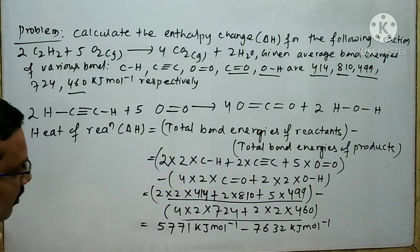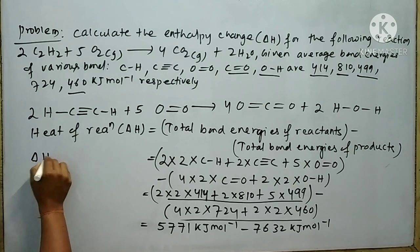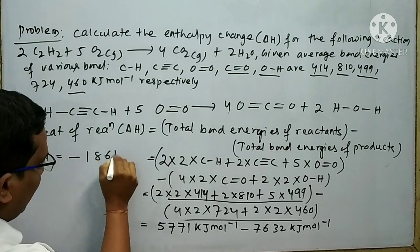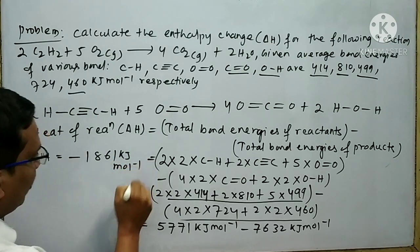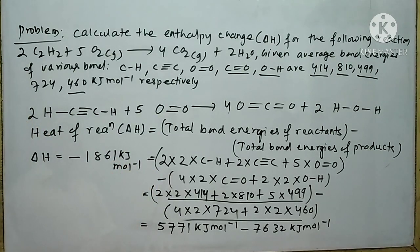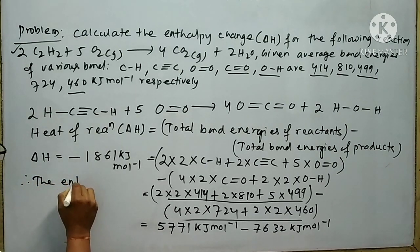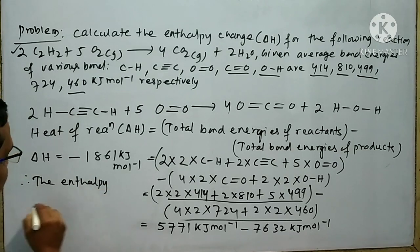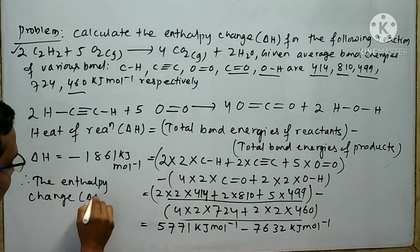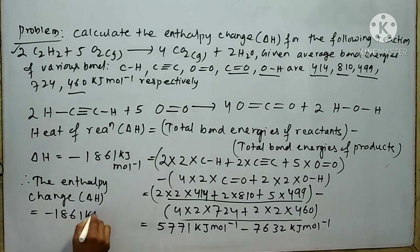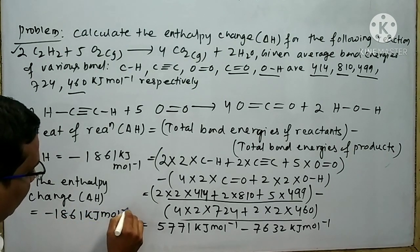After calculation, the total bond energies of the reactants is 5771 kJ mol⁻¹, and the total bond energies of the products is 7632 kJ mol⁻¹. Therefore ΔH = −1861 kJ mol⁻¹, which is the enthalpy change for this reaction.